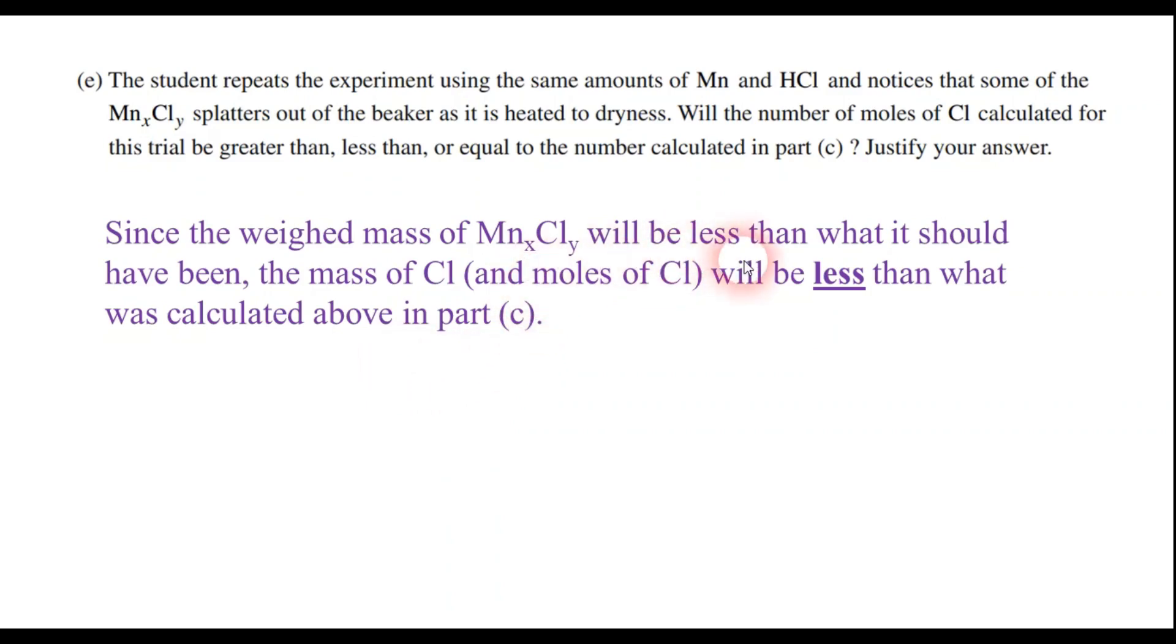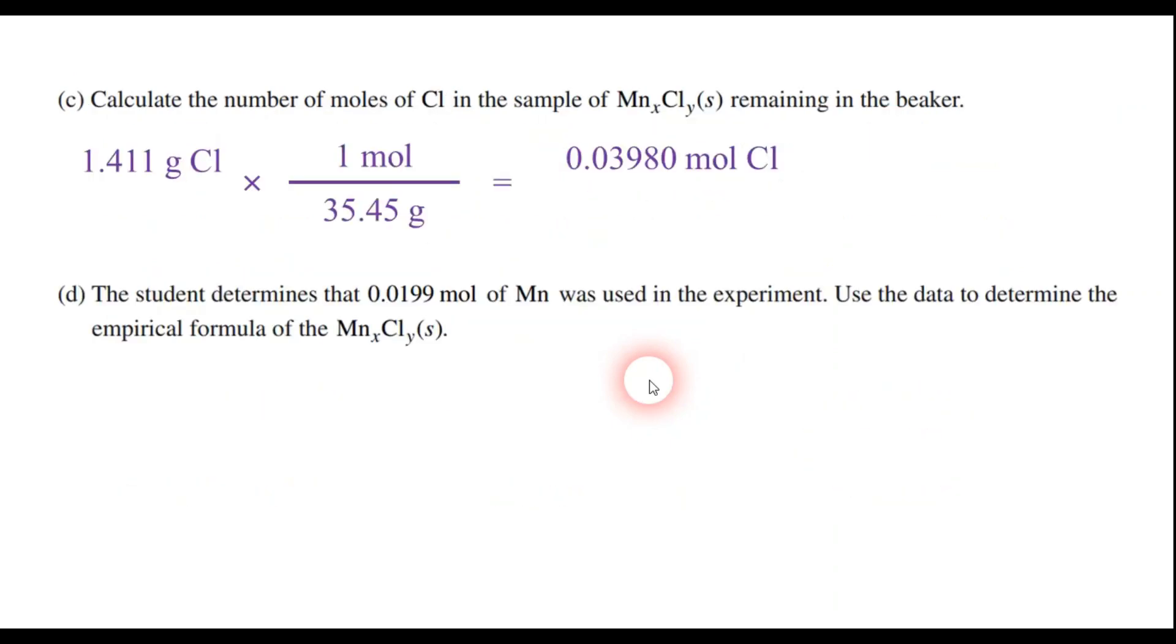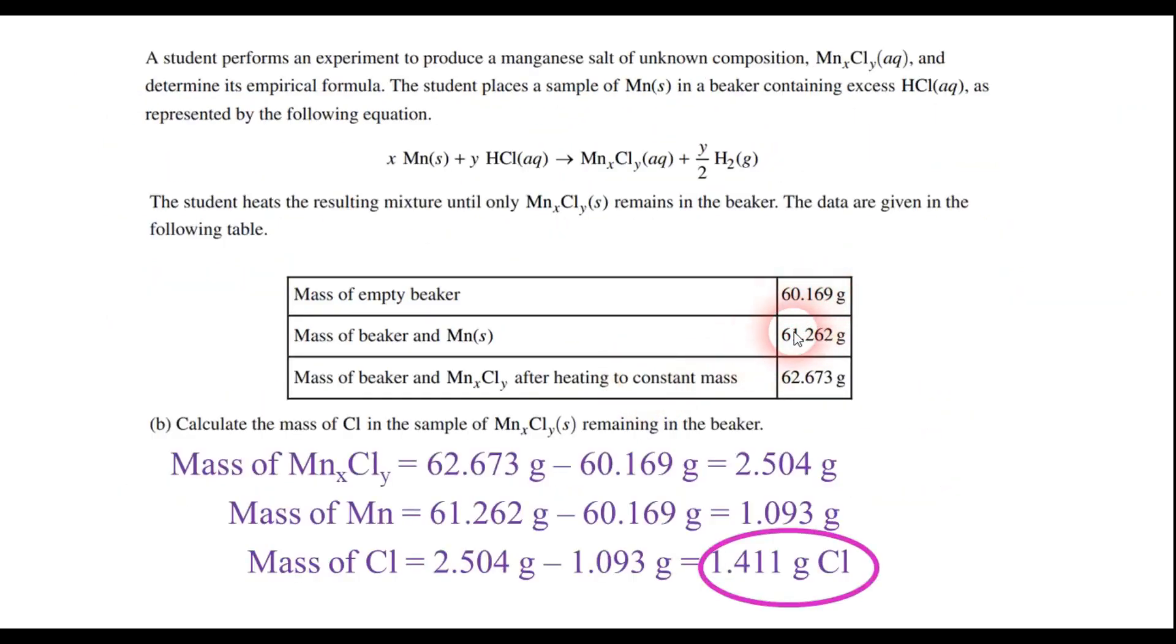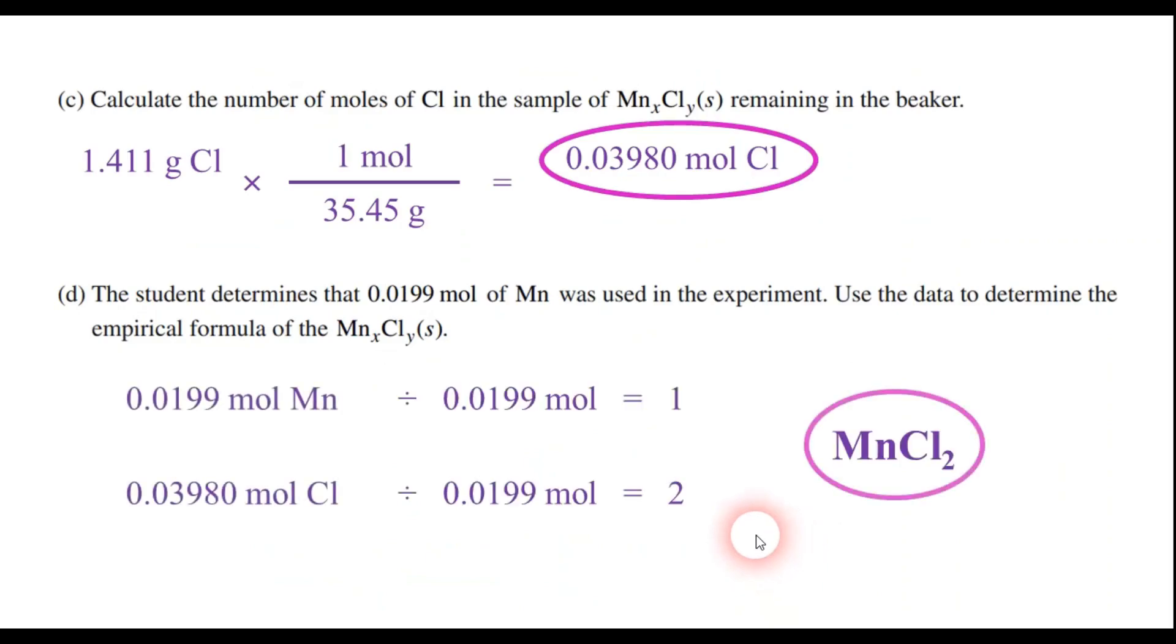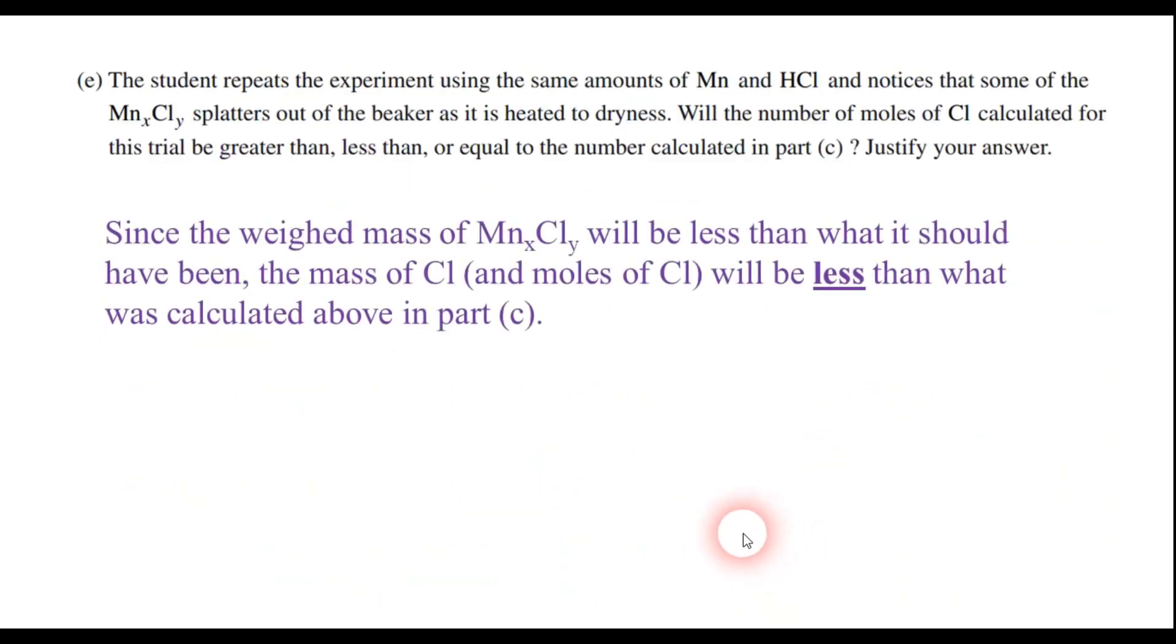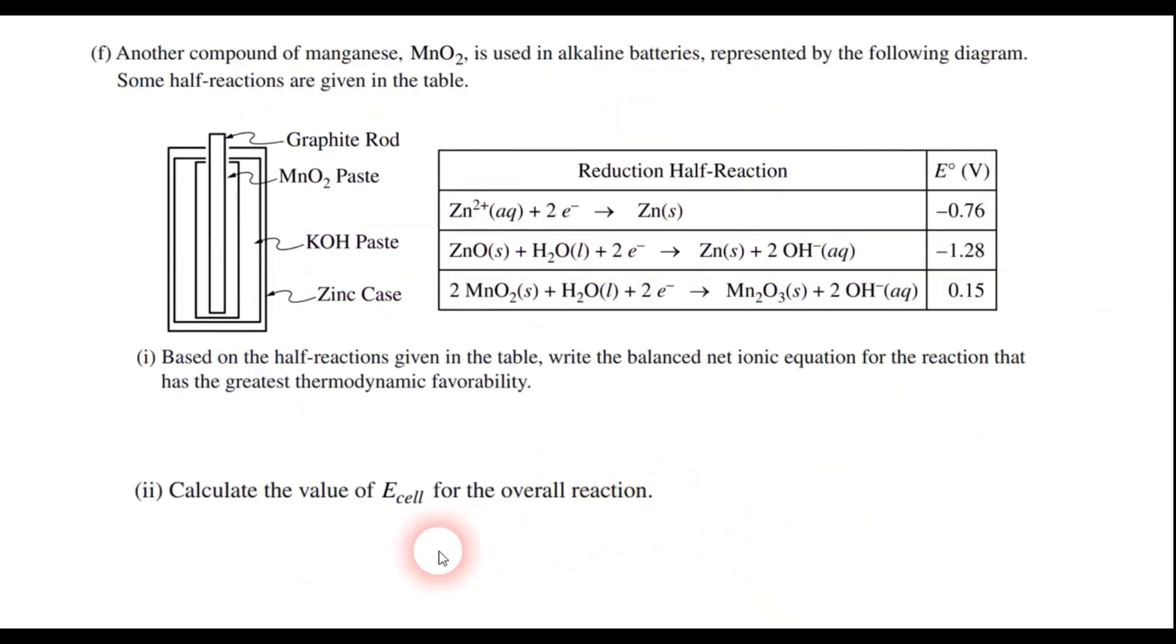And here's my justification. Since the weighed mass of the product is less than what it should have been, the mass of chlorine, and conversely, the moles of chlorine, will be less than what was calculated. And by the way, you can follow this through in the calculations. You can just imagine if you had a smaller number right here, instead of 62.673, we're like 62 or something like that. And just follow those numbers through, and you'd have a smaller value for grams of chlorine, and likewise, a smaller value for moles of chlorine as well.